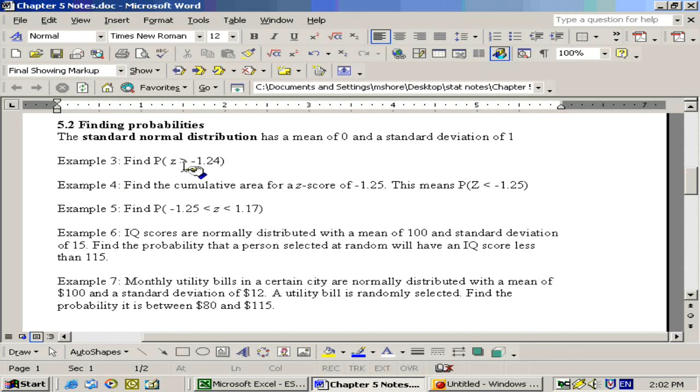For example, find the probability that z is greater than negative 1.24. We can do this on the Excel sheet.